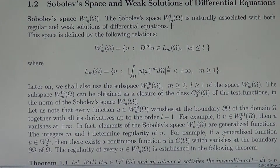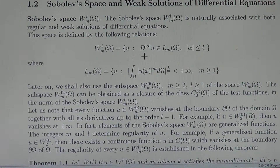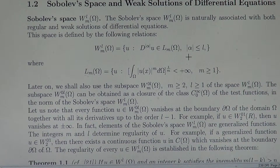The Sobolev space W^{L,M} on Ω is naturally associated with both regular and weak solutions of differential equations. This space is defined by the following relations: W^{L,M}(Ω) equals the set of all functions U which have partial derivatives of order |α| in the space L^M(Ω), for all multi-indices α with |α| less than L.